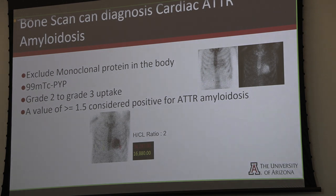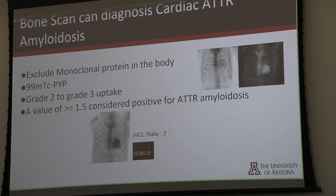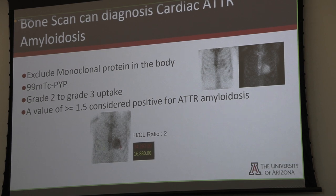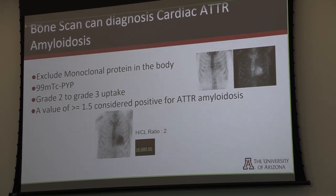We are all well aware of the bone scan. In order to delineate AL from TTR amyloidosis, we basically exclude the monoclonal protein in the body. We use PYP — if the uptake in the heart is equal to or above that of the bone, it is considered grade 2 or grade 3: highly sensitive, highly specific. We can also quantify it by placing a region of interest over the heart and comparing it to the contralateral area; if the ratio is above 1.5, this is ATTR amyloidosis.